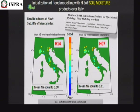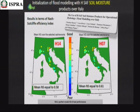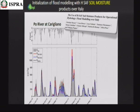The soil moisture products H07 and H14 — the assimilated one just shown — were used to initialize the hydrological model for flood forecast across 35 Italian catchments. The efficiency coefficients such as the Nash-Sutcliffe coefficient were quite good. Here red is good and blue is bad, and results tended mostly toward yellow to red, meaning acceptable performance for model initialization.